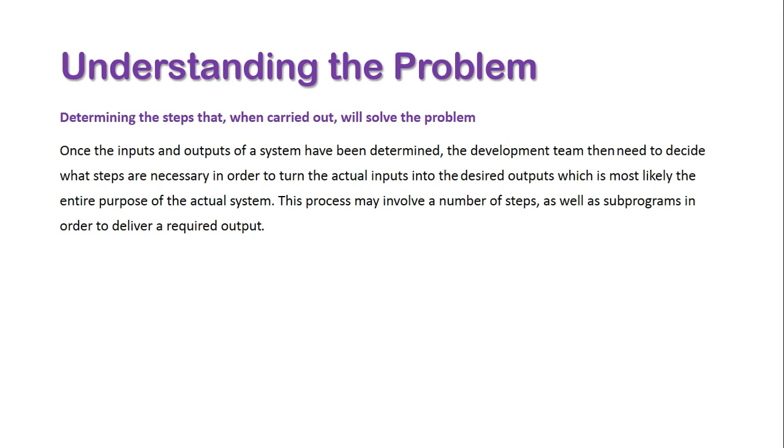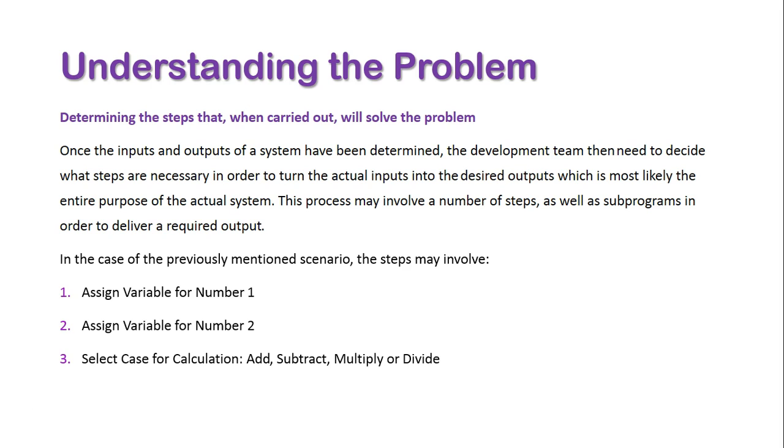The final stage is determining the processes that will turn the input into the output. The processes may involve a number of steps and sub-programs. In the calculator scenario, the steps involve: assign a variable for number one, assign a variable for number two, select a case for calculation (add, subtract, multiply, or divide), calculate number one and number two, and then display the calculation result.